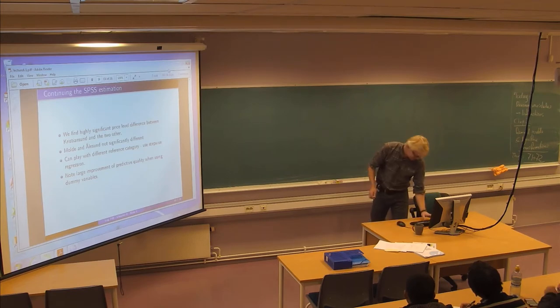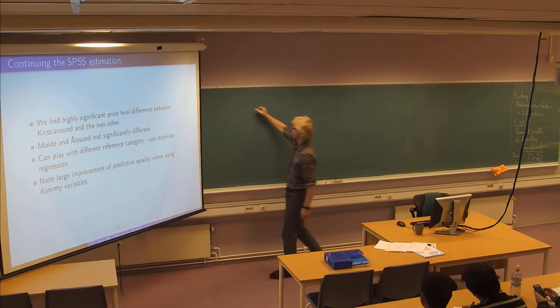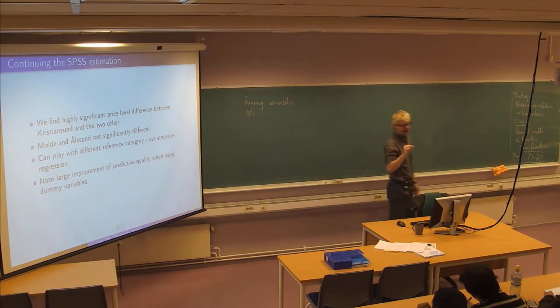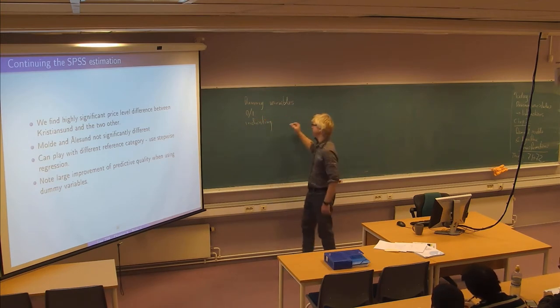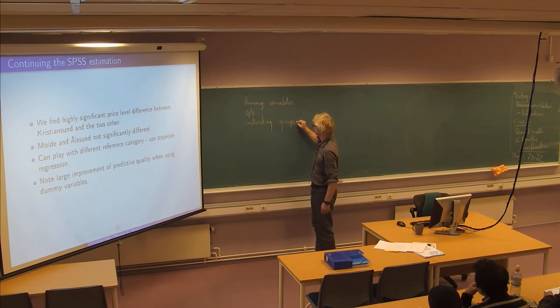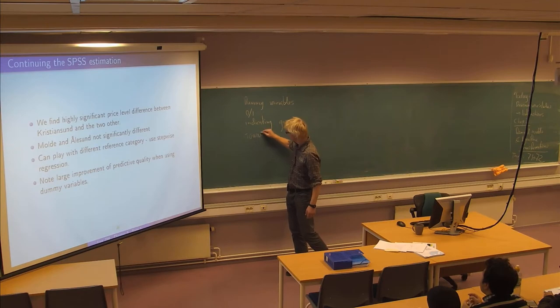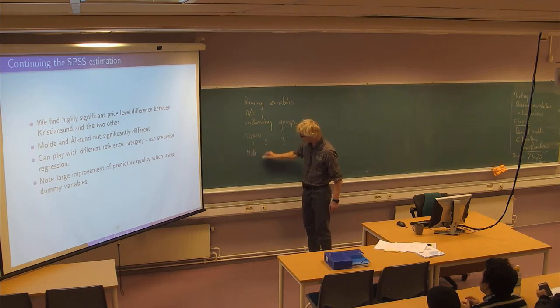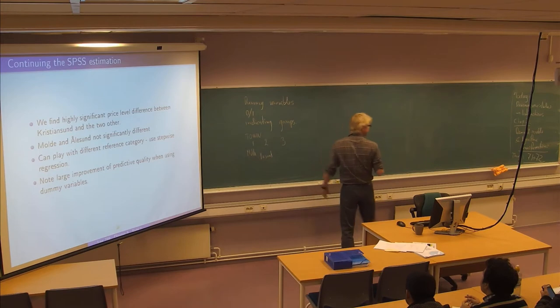OK, so let's try to get started again with this thing we used. Last week we looked at dummy variables being 0,1 variables and they were sort of indicating groups. We had the example of flat prices, we had this town variable which had the values originally 1, 2 and 3 which were Molde, Kristiansund and Alesund.